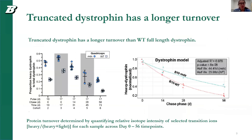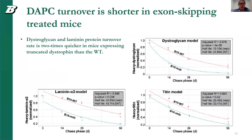We can plot this trend over time to see how different treatment groups — MDX-treated and wild type — have their proteins turn over. When we normalize to the highest labeling point at day 17, we can calculate an exponential decay regression model to determine protein turnover. We saw that truncated dystrophin in the treated MDX model has a longer turnover than wild-type full-length dystrophin protein. However, for DAPC proteins, we saw the opposite: dystroglycan and laminin had double the half-life in wild type compared to treated MDX. So while we saw improved turnover in truncated dystrophin, this improvement was not reflected in other muscle-related proteins.